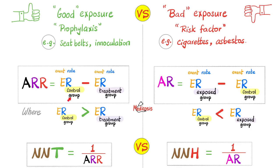You always want to start with the big number and then subtract the smaller number. In absolute risk reduction, the bigger number is the event rate in the control group not exposed to the good thing, minus the event rate in the treatment group — it's lower because they've been treated and risk has been reduced. With attributable risk it's the opposite: the event rate in the exposed group is greater. Flip the absolute risk reduction and you get number needed to treat; flip the attributable risk and you get number needed to harm.